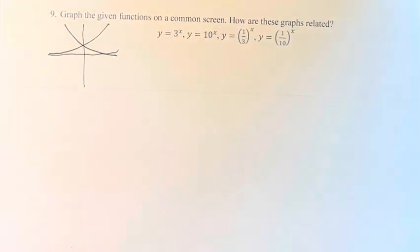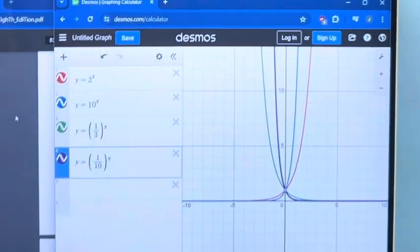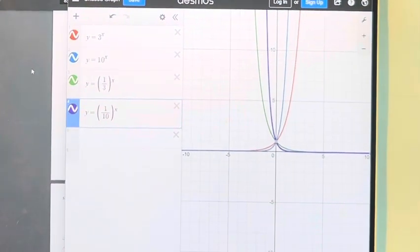However, if we actually pull it up on a graphing calculator, I've plugged them into Desmos. What we can see here is that we have differences that are sort of small, and you wouldn't really pick up on a hand-drawn graph in these functions.